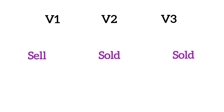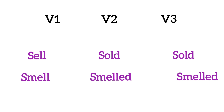Next is 'sell' — sell means bechna (to sell). Its second form is 'sold' and third form is also 'sold'. Next is 'smell' — smell means kuch smell karna, sungna (to smell or to sniff). Its second form is 'smelled' and third form is also 'smelled'.